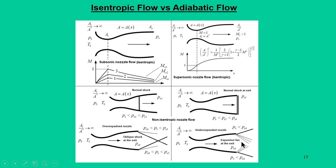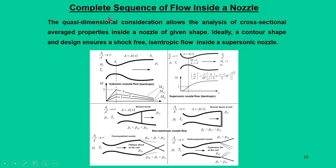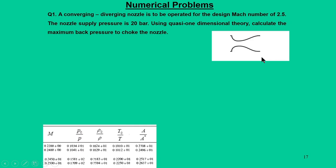A quasi-one-dimensional consideration allows analysis of cross-sectional average properties inside the nozzle for a given shape. Ideally a contoured shape ensures a shock-free isentropic supersonic flow inside the nozzle, where area is a contoured function of x rather than straight-line transitions. Now we will try to solve some numerical problems based on the study done so far.